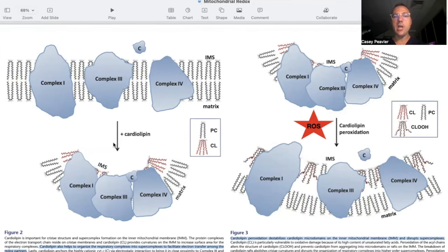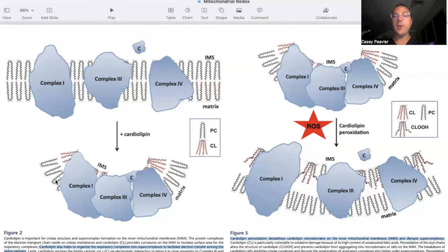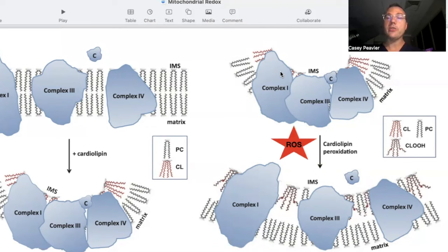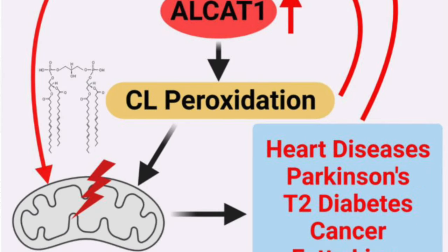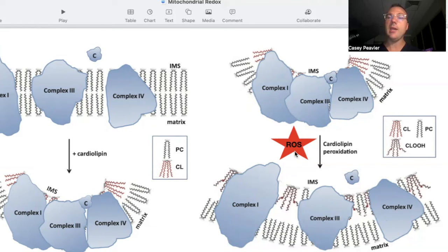When you add cardiolipin to a normal membrane, you automatically start to form the mitochondrial cristae and get adequate super complex formation. This yields efficient electron transport, efficient proton transport, efficient ATP production, and limitation of reactive oxygen species. However, when there is excess oxidative stress, cardiolipin becomes oxidized — peroxidation of cardiolipin damages cristae formation, dissolves the mitochondrial super complex, leads to decreased energy production and inefficiency of electron transport, which snowballs into more reactive oxygen species, leading to mitochondrial dysfunction, increasing heteroplasmy, and cellular damage.